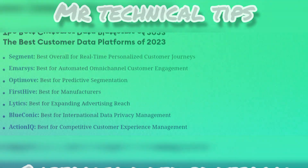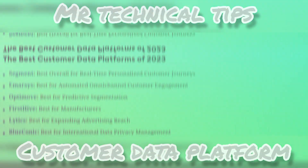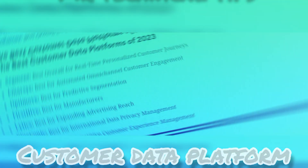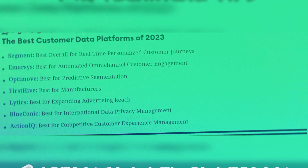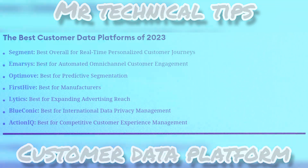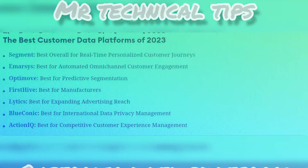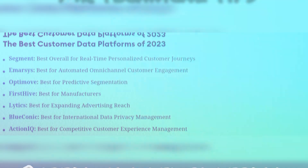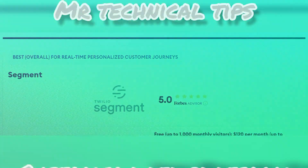The seven best customer data platforms of 2023: first, best overall for real-time personalized customer journeys; second, Emarsys, best for automated omni-channel customer engagement; third, Optimove, best for predictive segmentation; fourth, Firsthive, best for manufacturers; fifth, Lytics, best for expanding advertising reach; sixth, BlueConic, best for international data privacy management; and seventh, ActionIQ, best for competitive customer experience management.